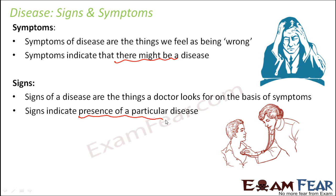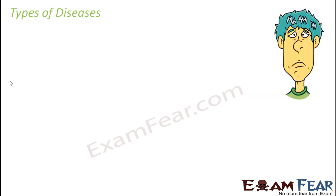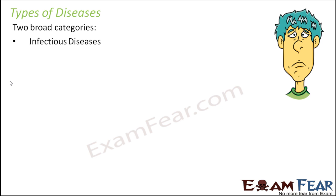These are the differences between signs and symptoms. Many people use these two terms as synonyms, but that is not the case. Symptoms tell that there can be a disease or there cannot be a disease, but signs confirm that the disease is definitely there. Now let us talk about the types of disease. Broadly, we can divide diseases into two categories: infectious disease and non-infectious disease.